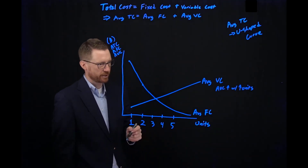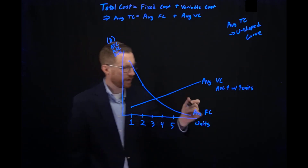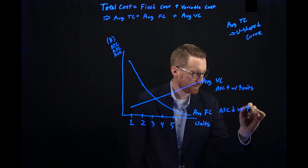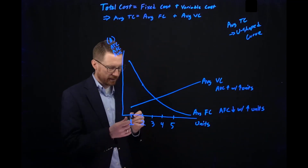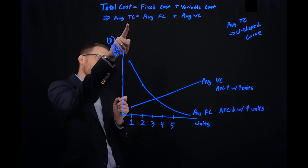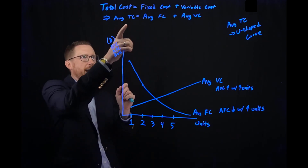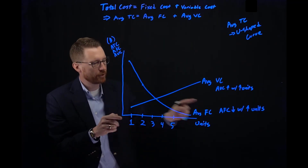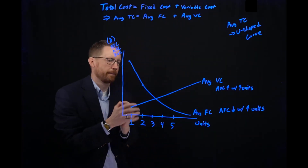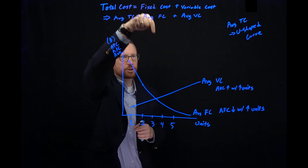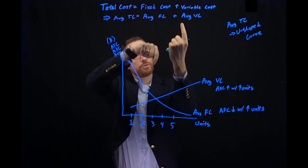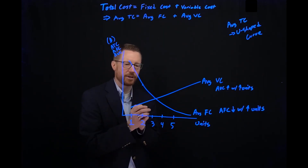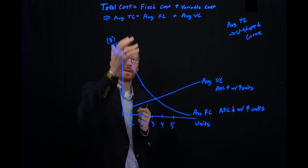But what happened to average fixed costs? It's going the other way. Average fixed cost, AFC, decreases with increases in the number of units produced. So think about our story for just a second. Total cost is fixed cost plus variable cost, and average total cost is average fixed cost plus average variable cost. As the number of units increases, we have these opposing forces: average fixed cost is decreasing, but average variable cost is increasing — they're going in opposite directions.